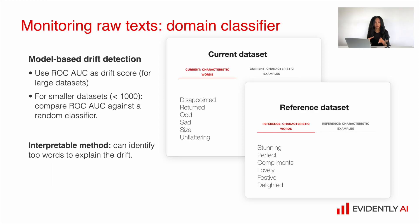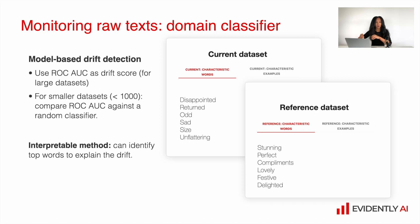If you build an interpretable model, which I really recommend, you can use information about the strongest features. For example, here we have a classification between the current and the reference dataset, and those datasets include data with different sentiment. In the current dataset, I can see characteristic words like 'disappointed,' 'returned,' 'odd,' 'sad.' And in the reference dataset, I can see words like 'stunning,' 'perfect,' 'compliments,' 'lovely.' These are user reviews for some clothes. Those words were derived from the model — they are the strongest features the model used, based on bag-of-words.